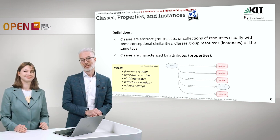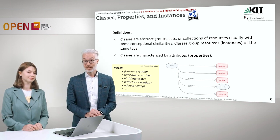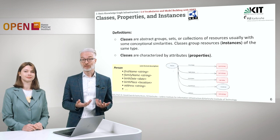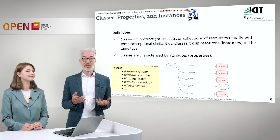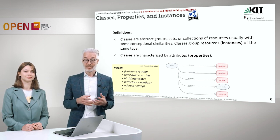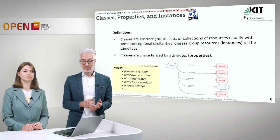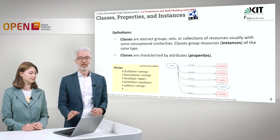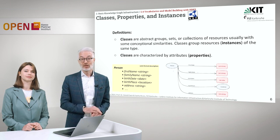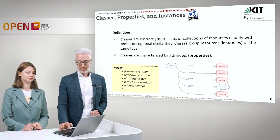Now, let's get a bit more specific. For defining schemas, what we need are things to aggregate resources, and the first aggregator is classes. Classes are abstract groups, sets or collections of things — of resources — that usually have the same kind of conceptual similarities, sharing a specific property for example. The things which classes consist of are so-called instances, and they are of the same type. Classes are characterized by attributes. For example, in the yellow box here, we see a semi-formal description of a class: person has a first name given as a string, a family name also as a string, a birth date as a date, and so on. We could also denote a class with an RDF graph, as seen on the other side.